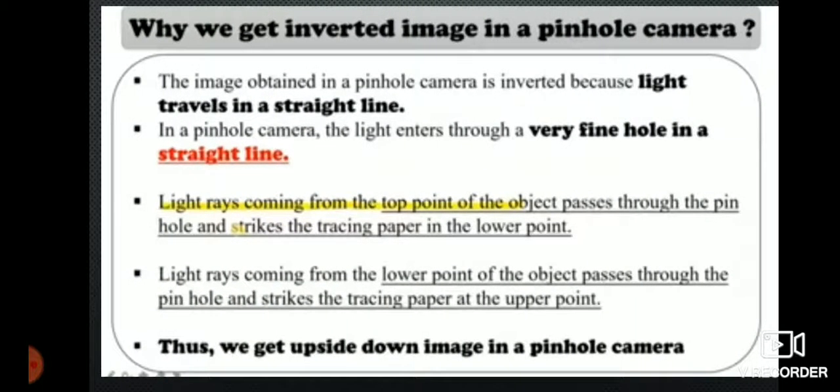Why we get inverted image in a pinhole camera? The image obtained in a pinhole camera is inverted because light travels in a straight line. In a pinhole camera, the light enters through a very fine hole in a straight line. Light rays coming from the top of the object pass through the pinhole and strike the tracing paper at the lower point. Light rays coming from the lower point of the object pass through the pinhole and strike the tracing paper at the upper point. Thus, we get an upside down image in a pinhole camera.